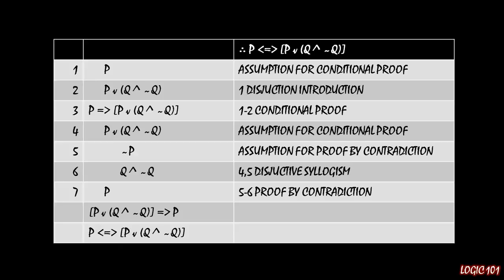If we have p on a line on this first indentation, our goal for this conditional proof was to assume that p or q and not q was true and show that p follows as a result of that. And we've just done that. We're done. This is it.